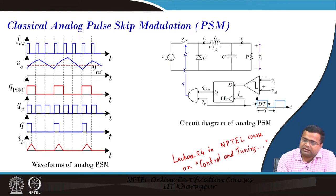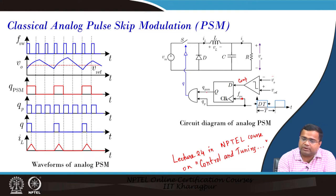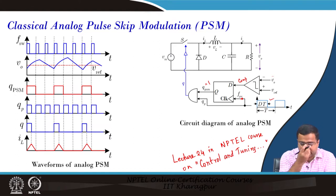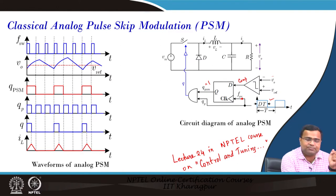How does it work? First there is a D flip-flop. At every rising edge of the switching clock, it checks whether the output voltage is higher or lower than V_ref. If the output voltage is smaller than V_0, the comparator output will be 1, D will be reflected to Q, Q will be high, Q_PSM will be high, and it will simply pass the same clock. That means it understands you need to inject some energy, then it goes to a high pulse and takes the duty ratio of the clock, and that is the charge pulse throughout this cycle.